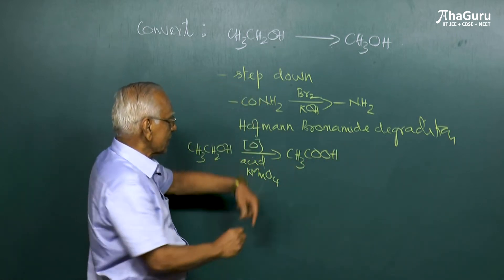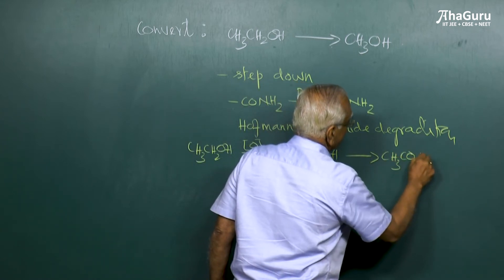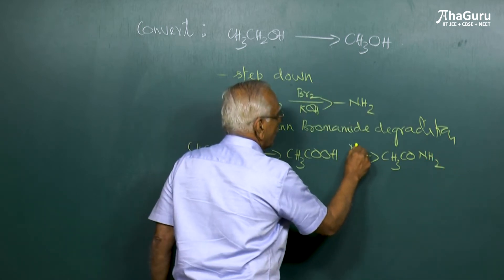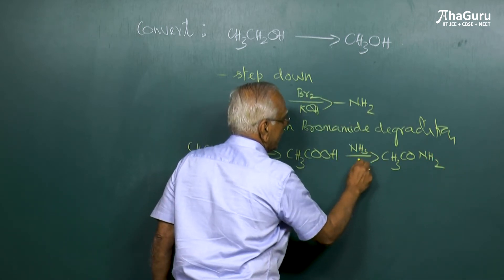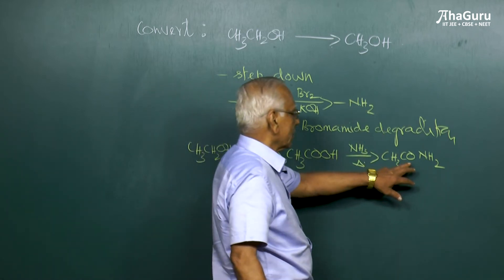Now this acetic acid or ethanoic acid can be converted into CH3CONH2. How is it done? Add ammonia and heat it. On heating, ethanoic acid is converted into that.